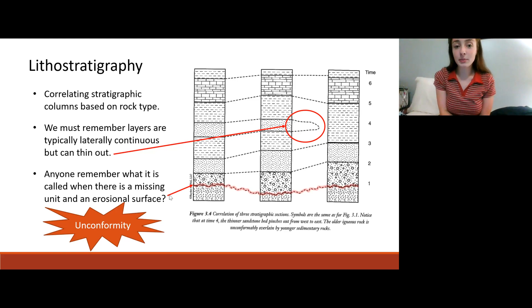Unconformities can be either angular unconformities, non-conformities, or disconformities. In this case the erosional surface is at the base of a conglomerate and at the top of an igneous rock unit. The correct answer is non-conformity. Angular unconformities are when the layers underlying the unconformity are angular to the erosional surface. Disconformities are where you have an erosional surface between two sedimentary rock layers and non-conformities separate different rock types such as metamorphic and sedimentary or igneous and sedimentary.